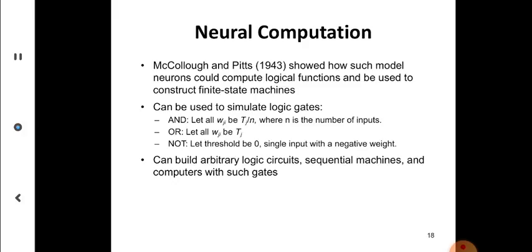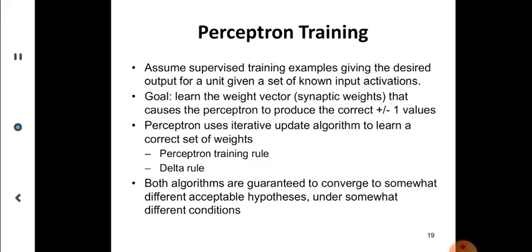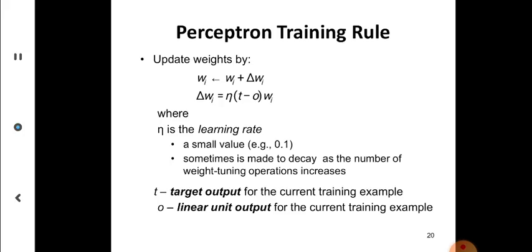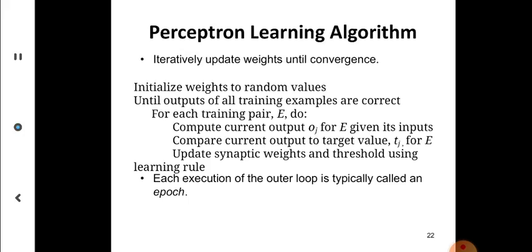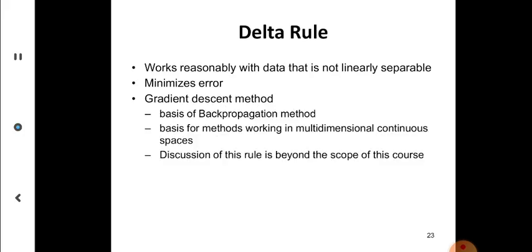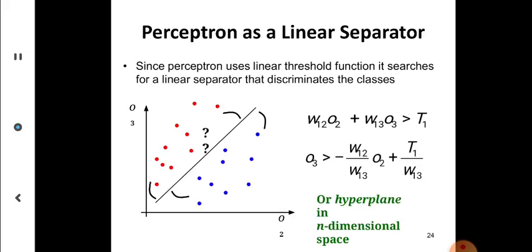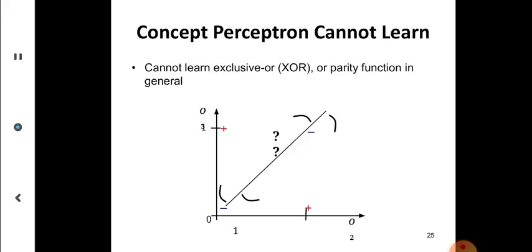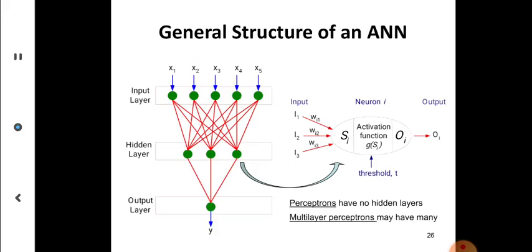The general structure of an artificial neural network. McCulloch and Pitts came up with a model for computing. There is perceptron training for single layer networks. This is the most important slide in our discussion. What we see is an input layer of neurons, then a hidden layer, and then an output layer.